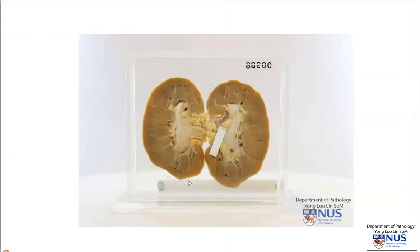Many conditions can contribute to end-stage renal failure, which would result in an end-stage kidney. Examples would be diabetic nephropathy, hypertension, glomerular conditions like glomerulonephritis, even pyelonephritis, and also chronic urinary tract outflow obstruction which is untreated. All these can contribute to end-stage kidney.